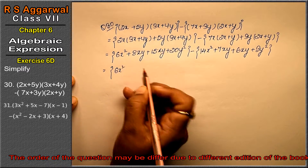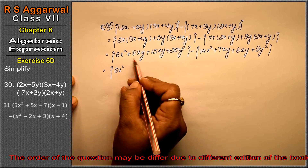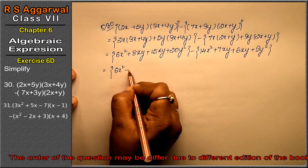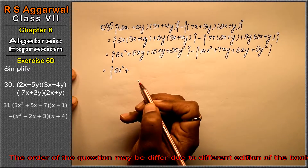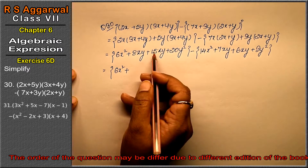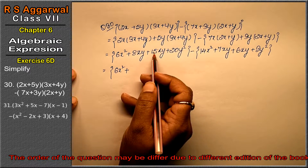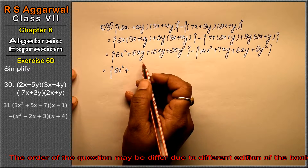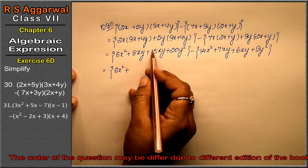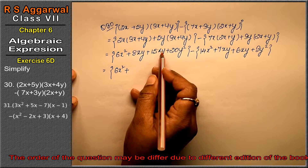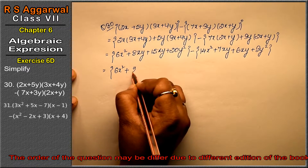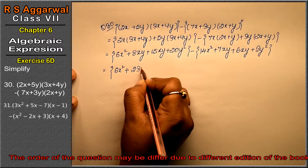6x square. Now the xy terms: 8 and 15 are to be added — both positive, so they add together. The bigger sign applies. 15 plus 8: counting up gives 23. So we have 23xy.